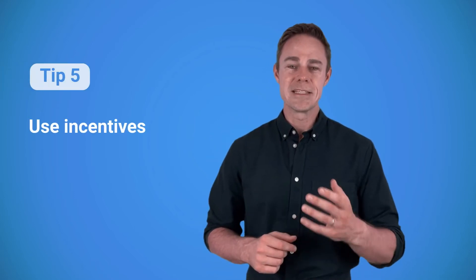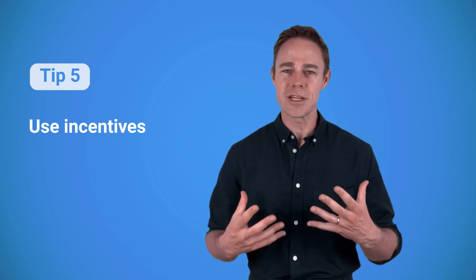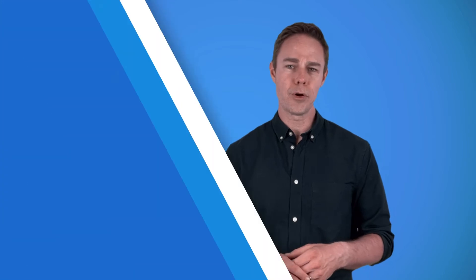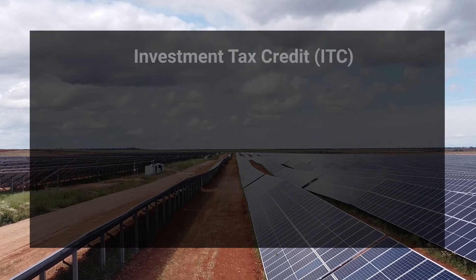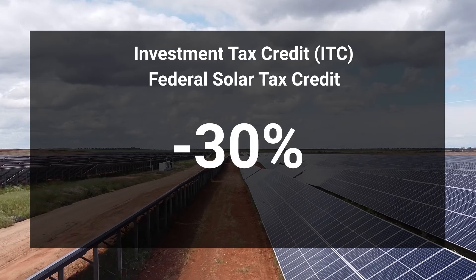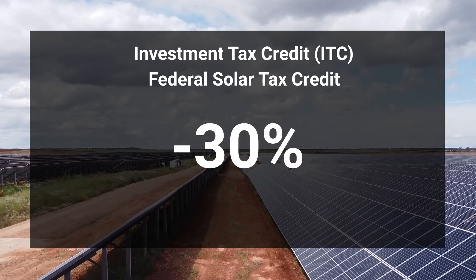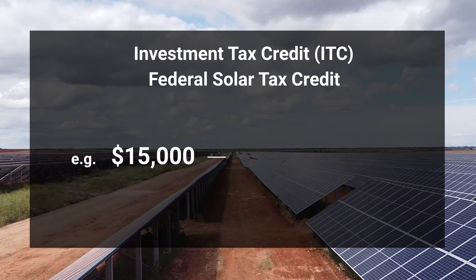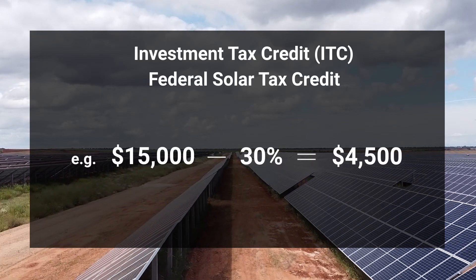Speaking of special programs, tip number five, use incentives. State and utilities actually want us to go solar, and they're willing to help financially as well. The most important program for solar owners is ITC, or Federal Solar Tax Credit. It lets you deduct 30% of your installation cost from your income taxes. For example, if you have a solar system that costs $15,000, you could claim $4,500 back.